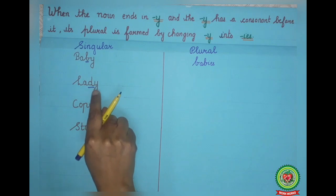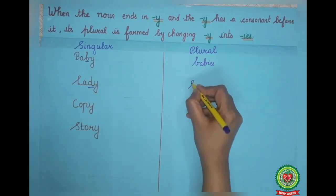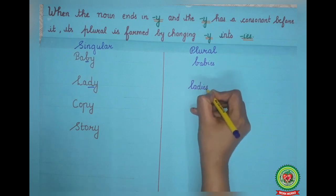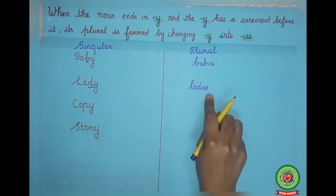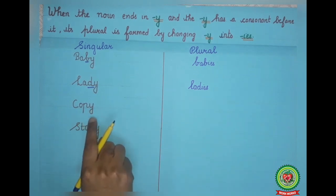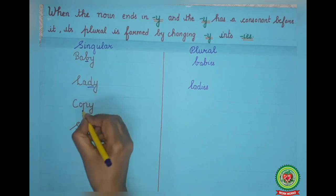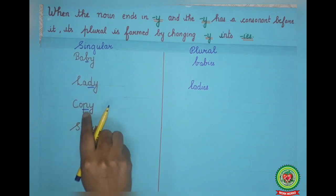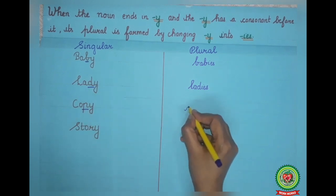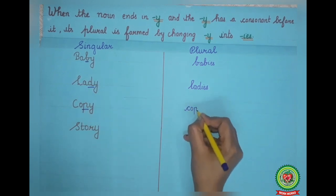We will make it plural by simply adding IES to the singular noun. So ladies will be the plural noun. Next example: copy. Again, the singular noun ends with Y and before Y, the consonant R is there. So copies will be the plural noun.